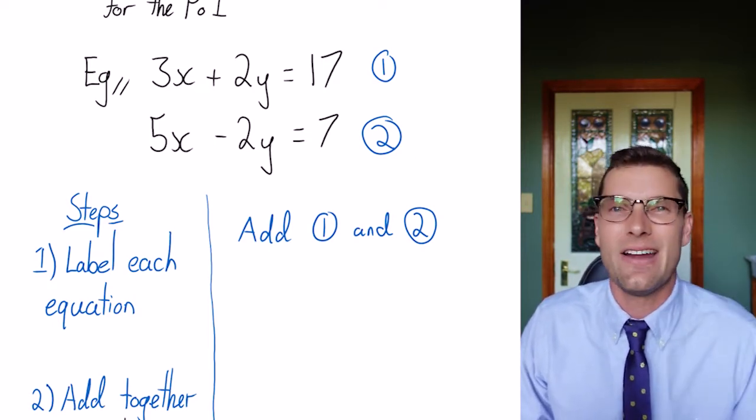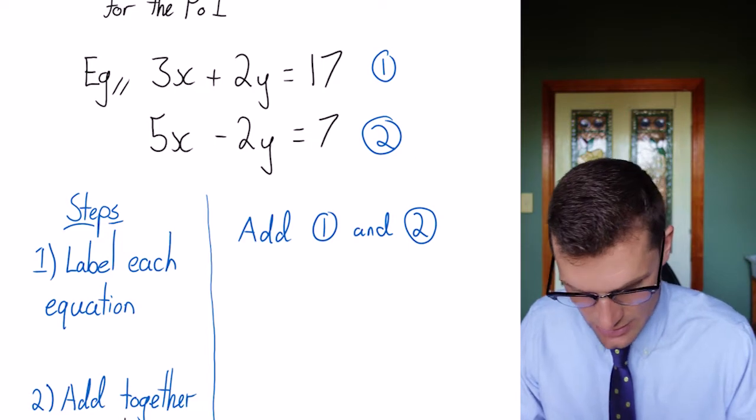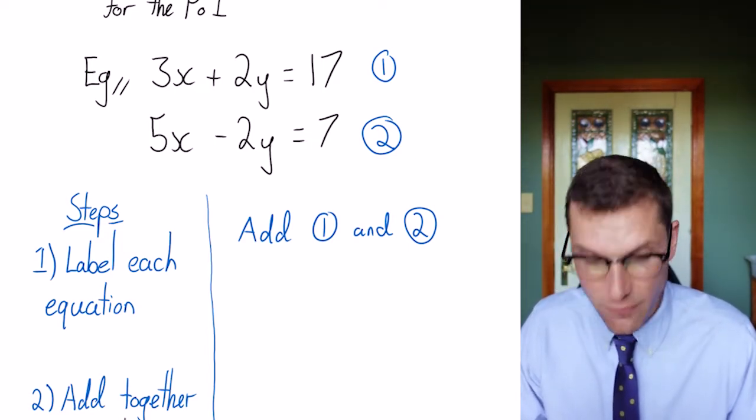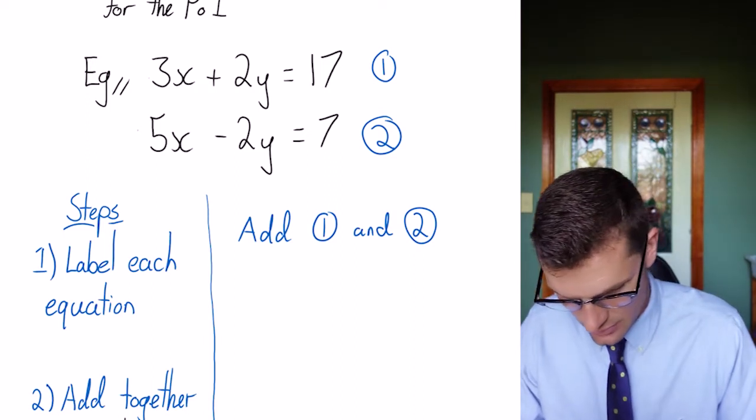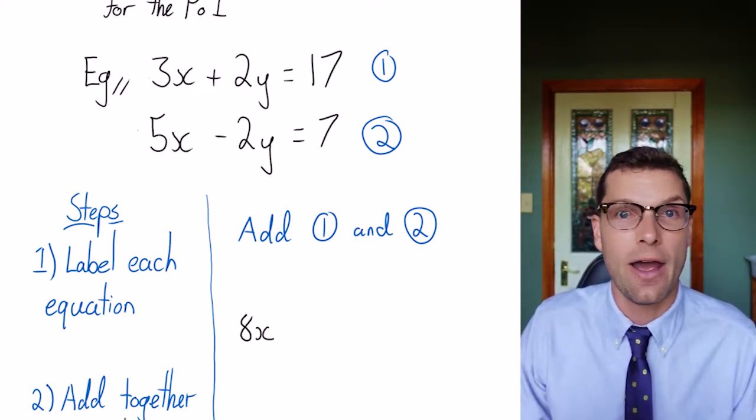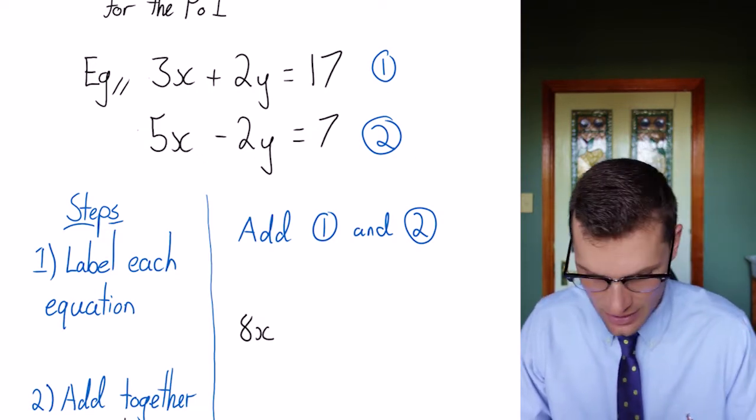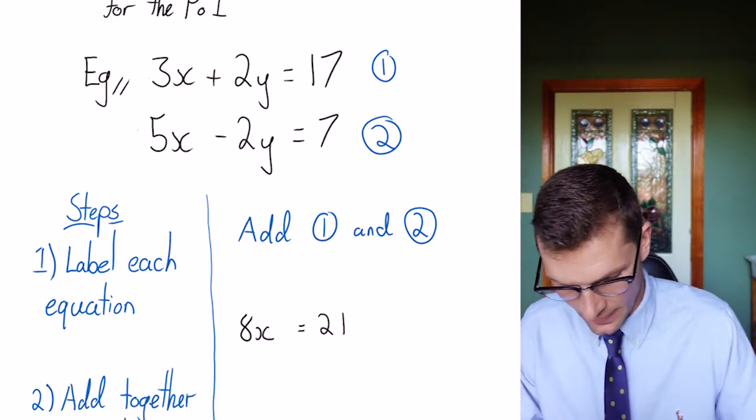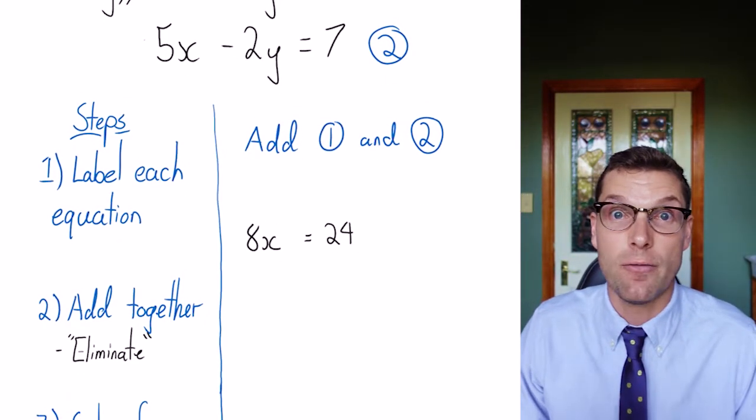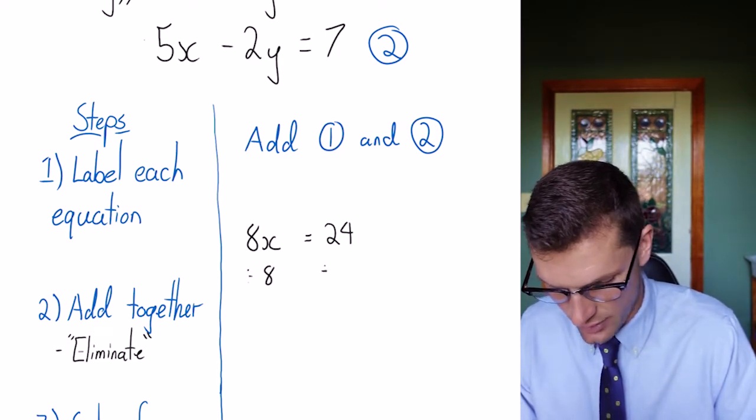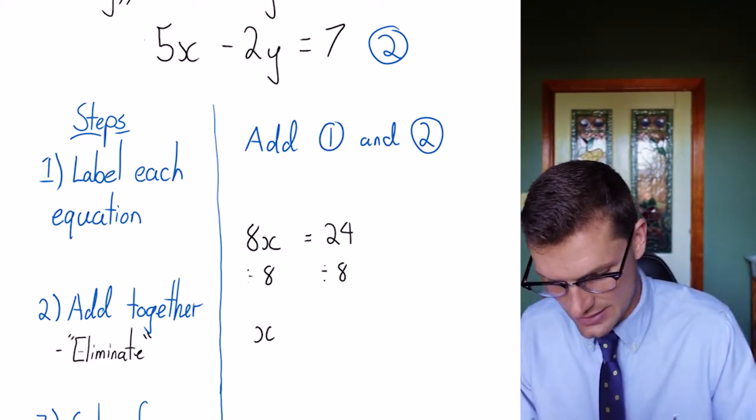So I've got to add every single term. So the 3x and the 5x add together. So I've got 8x plus 2y minus 2y. They eliminate each other. That's why it's called elimination. And the 17 plus 7 is equal to 24 there. So now I've just got to solve for x. I divide 8 on both sides, leaving me with x is equal to 3.